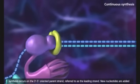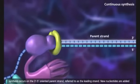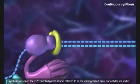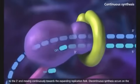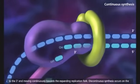Continuous synthesis occurs on the 3' to 5' oriented parent strand, referred to as the leading strand. New nucleotides are added to the 3' end, moving continuously toward the expanding replication fork.